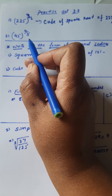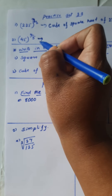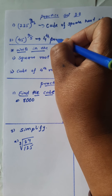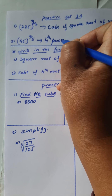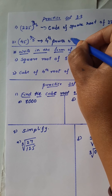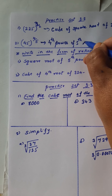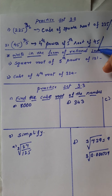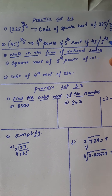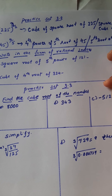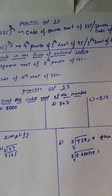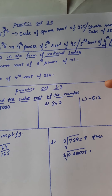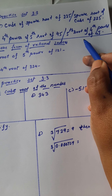Next, 45 raised to 4 upon 5. The power 4 gives us 4th power, and the denominator 5 gives us 5th root. So we write: 4th power of the 5th root of 45. Or alternatively: the 5th root of the 4th power of 45.